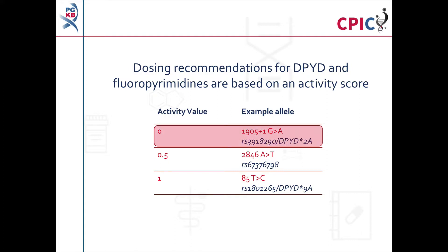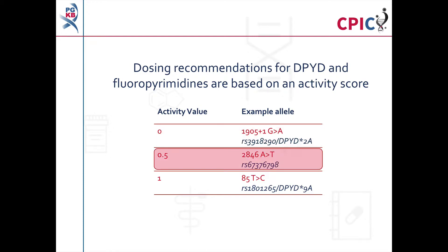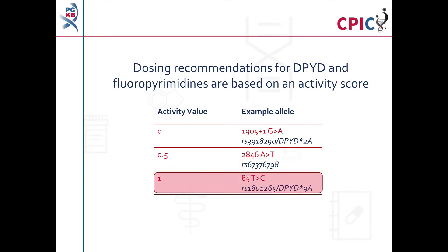Dosing recommendations for DPYD variants are based on an activity score. Each DPYD variant is assigned an activity value: 0 for an allele that results in no DPYD function, such as the 1905+1 G>A variant; 0.5 for an allele that results in decreased DPYD function, such as the 2846 A>T variant; and 1 for an allele that results in normal DPYD function, such as the 85 T>C variant.